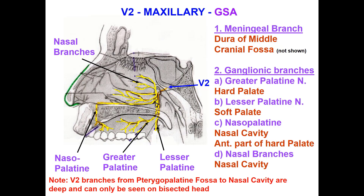The branches: the meningeal branch is the first one, for the dura of the middle cranial fossa. Second, ganglionic branches: greater palatine nerve for the hard palate, lesser palatine nerve for the soft palate, nasopalatine nerve for the nasal cavity and the anterior part of the hard palate, and nasal branches for the nasal cavities.